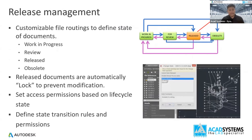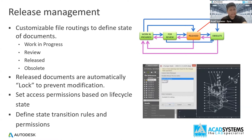For release management, I believe these topics are very good for management to know about. When you are done with something, normally you give the drawing to your boss in PDF and your boss needs to sign. But using data management, you just need to change one drawing state to 'for review', and after your boss approves, the drawing will be released to the shop floor. Instead of using paper and passing it to different departments, you can use release management to make sure your data flows to the proper location, from one person to another, from work in progress to review stage, then to release. You can also create a larger workflow for your company depending on how complicated you want it to be.